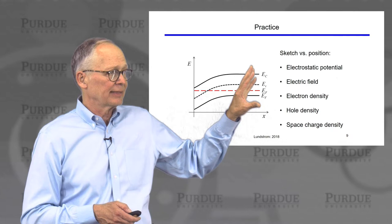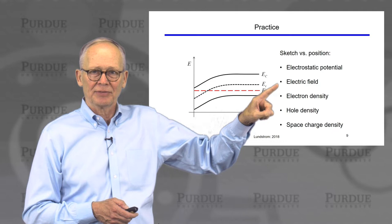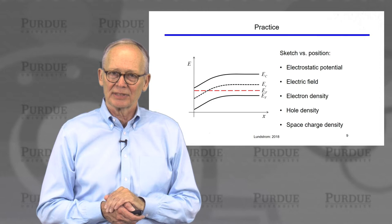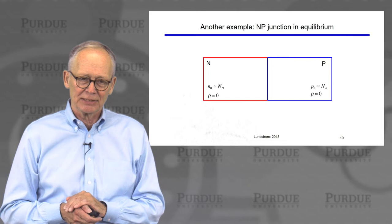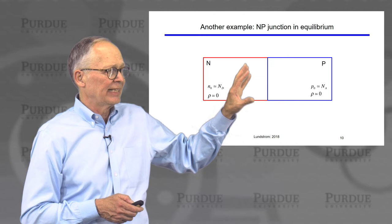So just for practice, take this energy band diagram and make a sketch of the electrostatic potential versus position, the electric field versus position, the electron density versus position, the hole density versus position, and the space charge density versus position. See if you can do that as a review.